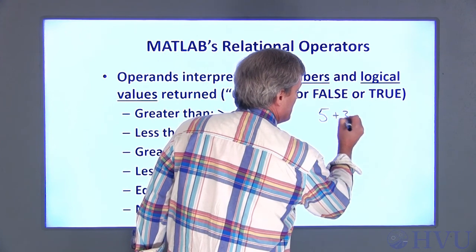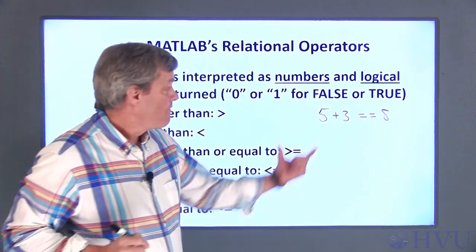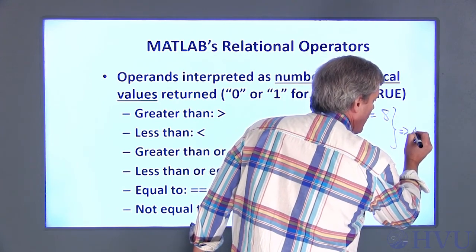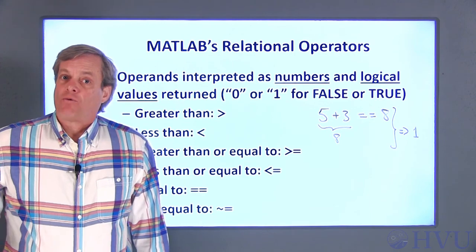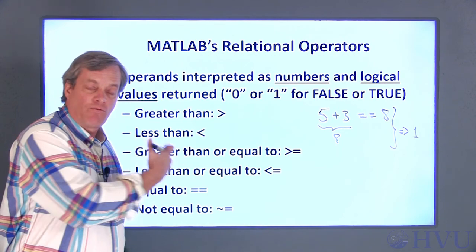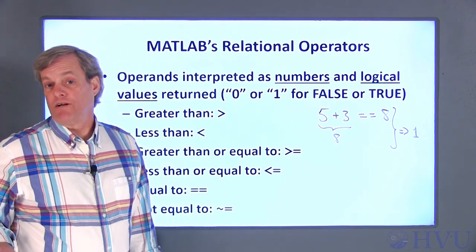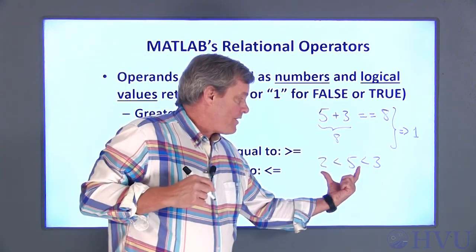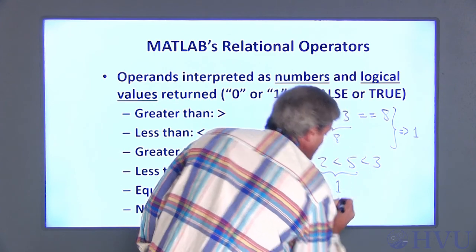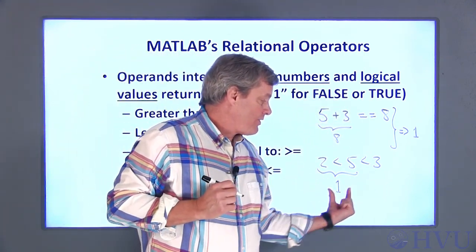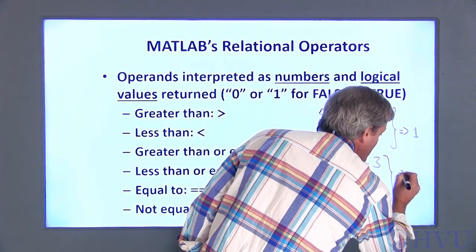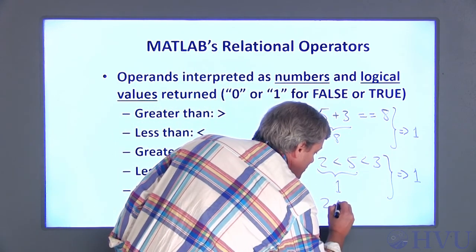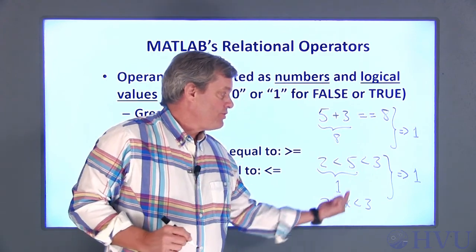For example, the command 5+3==8 first adds five and three to get eight, then checks to see if eight equals eight. That's true and MATLAB returns a one. All relational operators are of the same precedence, so they're performed from left to right, just as mathematical operations of the same precedence are. So the command 2<5<3 first checks whether 5 is greater than 2 — that's true, returning a one — then checks whether 1 is less than 3, which is also true. This is different from regular mathematical notation where 2<x<3 would be false if x equals five.